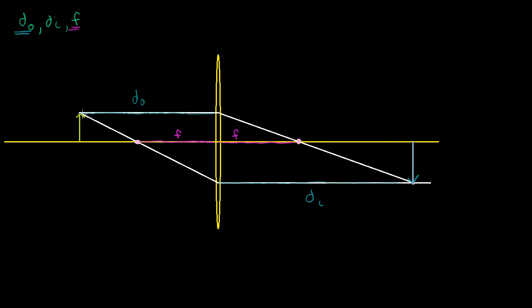The best thing I can think of is to redraw this triangle on the right-hand side of the diagram — just flip it over. So if I were to draw the same triangle flipped over, it would look like this. To keep track of corresponding sides: if this length here is d₀, then this length up here is also going to be d₀.